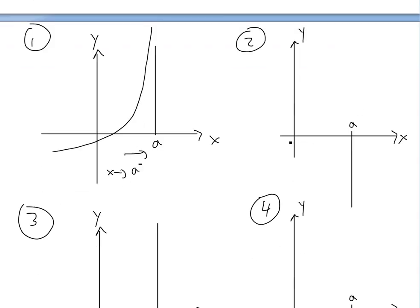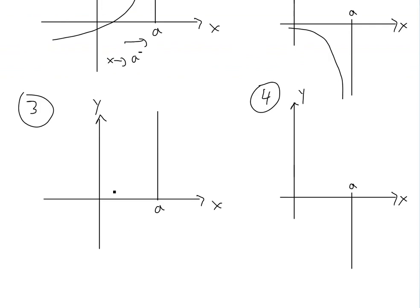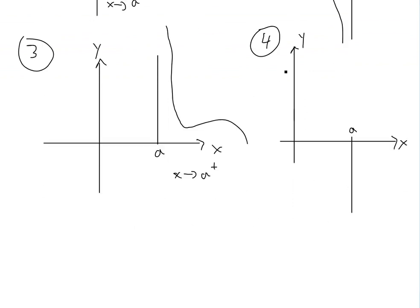Similarly, for case two, again we're approaching from the left side, but now it's going to be negative. So we just draw something like this. This one is going to be from the right side, so we'll have something like this going upwards towards there. This is x approaching a from the plus or the right side. And then the last case, approaching from the right side, but now it's going to be negative infinity. As you see, it's going downwards right here, and again it's approaching from the right side.